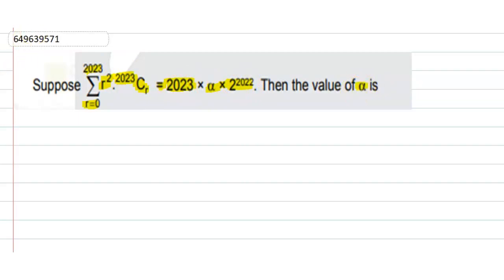So first of all, how we will solve it? Sigma r equals 0 to 2023, r square times 2023 C_r. It can be written as equal to sigma of r times of 2023 times 2022 C_(r-1).